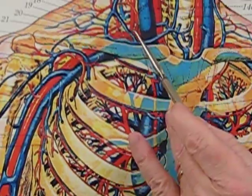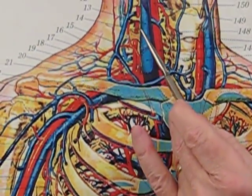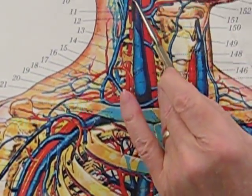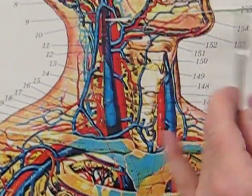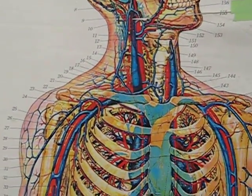We have the vertebral artery that goes up through the cervical transverse foramina, goes through the foramen magnum, and converges with the other vertebral to make the basilar artery.